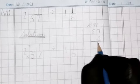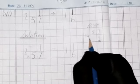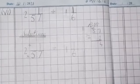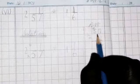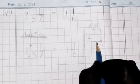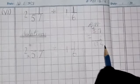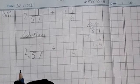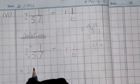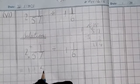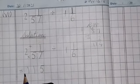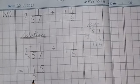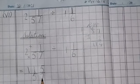2 sevens are 14. What do we need to write? 4. 1 is carry. 2 fives are 10. Add 1 to the answer. 11. Very good. Now, what do we need to add? 1 to the answer. How? 11.